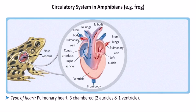Circulatory System in Amphibians: Amphibians like frogs have a pulmonary heart. The heart is divided into three chambers, consisting of two auricles and one ventricle.